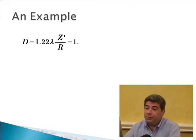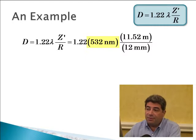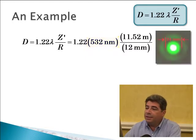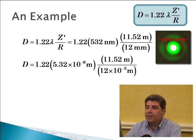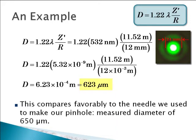The measurements we took are as follows: the distance between the pinhole and the screen was 11.52 meters, the wavelength of our laser was 532 nanometers — the green laser pointer — and the radius of the Airy disc was 12 millimeters. Plugging everything into the formula and converting nanometers to meters and millimeters to meters, we came up with a diameter of 623 micrometers. That compares very well with the diameter of the needle as measured with a micrometer: 650 micrometers.